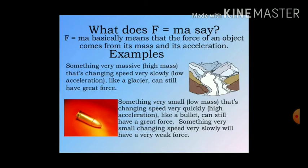Next example: something very small — low mass — that changes speed very quickly has high acceleration, like a bullet, and can still have a great force. In this example, the bullet's mass is very low in grams but its velocity is very high, so it still acquires a huge force on impact. This is because while the mass is low, the acceleration is very large, so the force is significant.